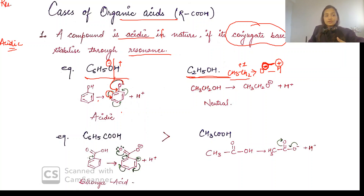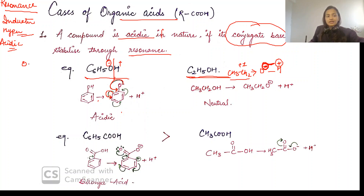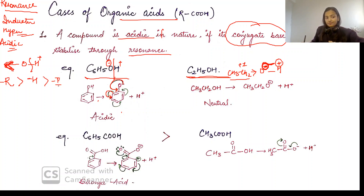You must have knowledge of resonance, inductive effect, and hyperconjugation — this knowledge is very important. If any species is acidic and gives H⁺, then it will be more acidic if there is a minus-R group, a minus-H group, or a minus-I (electron withdrawing) group. If there is a deactivating group it is strongly acidic. Then you consider hyperconjugation, then the inductive effect.